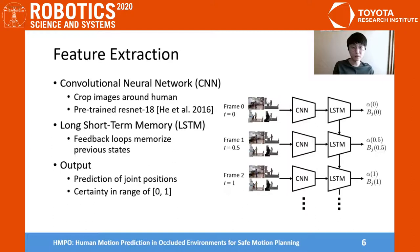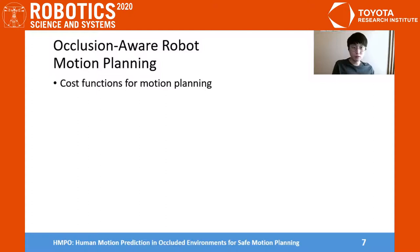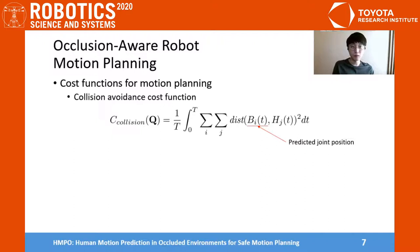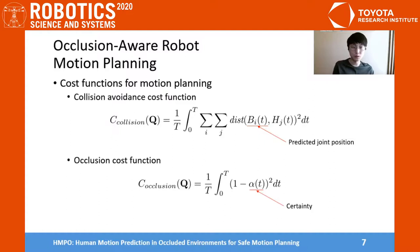The output is the prediction of joint positions and a certainty value in the range of 0 and 1. Certainty value 1 means that the robot could clearly see the human, whereas 0 means that the human is occluded by the robot and it could not predict human motion. We define occlusion-related cost functions for occlusion-aware motion planning. The collision-avoidance cost function is defined as the sum of penetration depth between predicted human joint positions and the robot. The occlusion cost function is the sum of 1 minus certainty, and minimizing this function helps remove occlusions on the human.